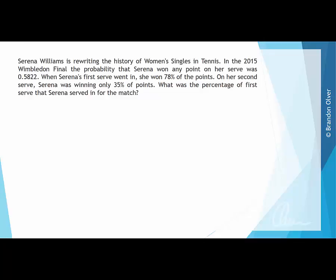Serena Williams is rewriting the history of women's singles in tennis. In the 2015 Wimbledon final, the probability that Serena won any point on her serve was 0.5822. When Serena's first serve went in, she won 78% of the points, and on her second serve, Serena was winning only 35% of points. What was the percentage of first serves that Serena served in for the match?